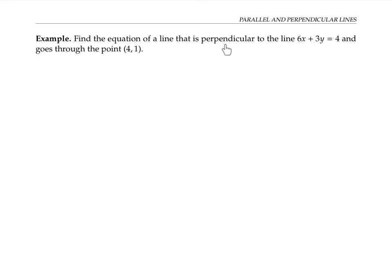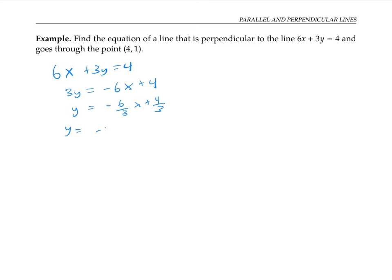Next, let's find the equation of a line perpendicular to a given line through a given point. I need to find the slope of the given line, so I'll rewrite 6x + 3y = 4 in slope intercept form by solving for y: 3y = −6x + 4, divide everything by three to get y = −2x + 4/3. So the original slope is negative two, which means my perpendicular slope is the opposite reciprocal. The reciprocal of negative two is negative one half, and changing the sign gives me one half as the slope of my perpendicular line.